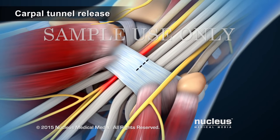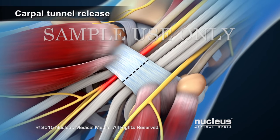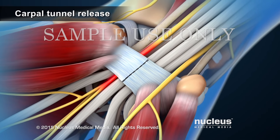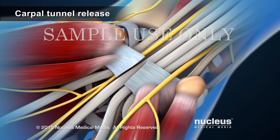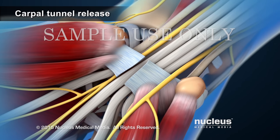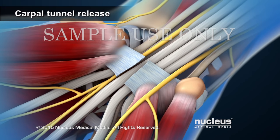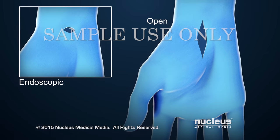In both procedures, the transverse carpal ligament will be cut to relieve pressure on the median nerve. At the end of either procedure, the incision will be closed with sutures.